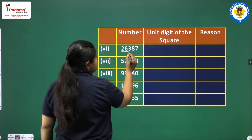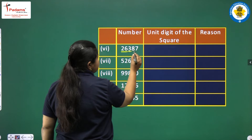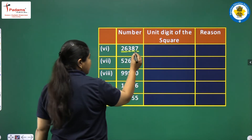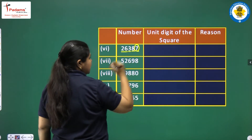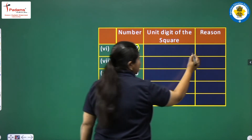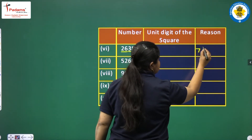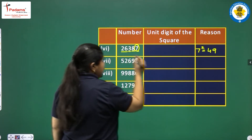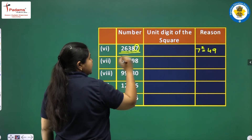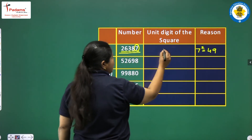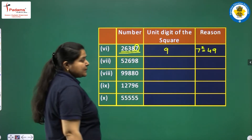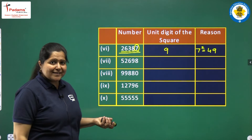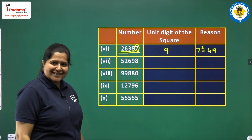For 26,387, the last digit is 7. We know 7 squared is 49. So the whole number's square will have 9 as the ones place digit.